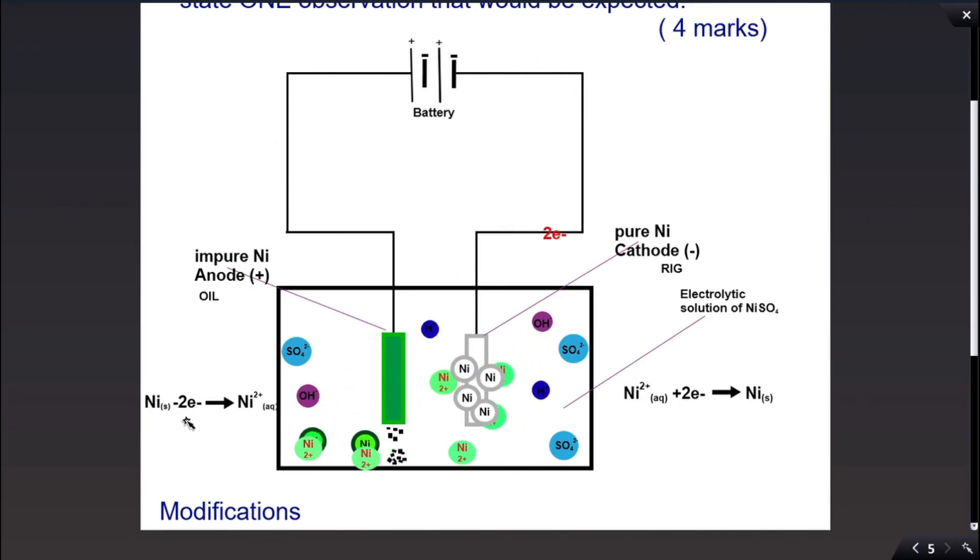Oxidation is taking place at the anode. The nickel gives up the two electrons to form nickel 2+ in solution. So we can see the nickel losing the electrons to form nickel 2+ ions. Those nickel 2+ ions then move to the cathode to be reduced or to undergo reduction.